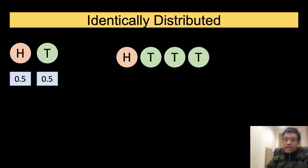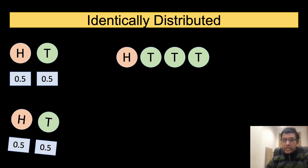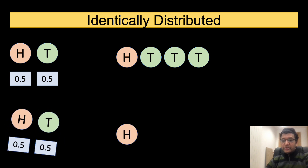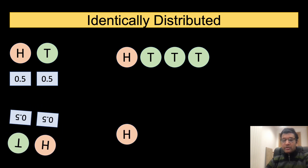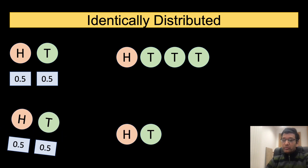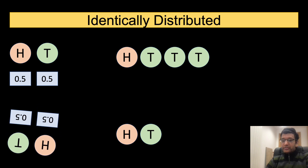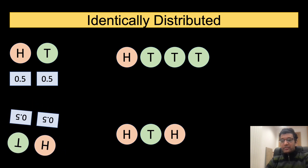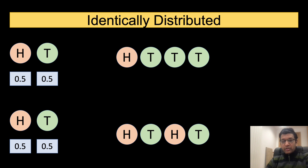Consider another example with the same coin. This time, we obtain an alternating sequence of heads and tails. What is important to observe is that the probability distribution stays constant for every toss.